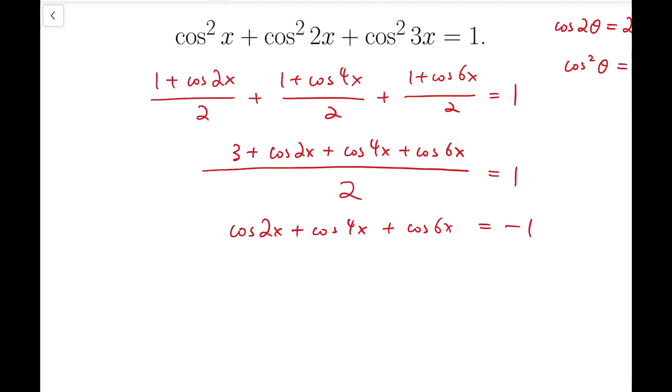Now I'll move the -1 to the left as well. The reason I'm doing this is that 1 can be written as cos 0, so we have symmetry between the first and last terms and the middle terms.